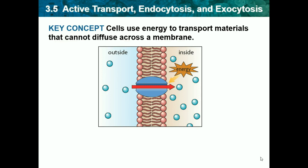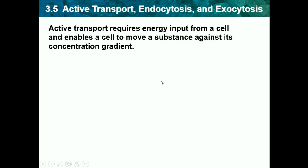Our key concept for today is: cells use energy to transfer materials that cannot diffuse across a membrane. In our last video we learned about passive transport, and now we are learning about active transport, which requires energy unlike passive transport. Active transport can go from low to high concentration, but it requires energy and enables a cell to move a substance against its concentration gradient.